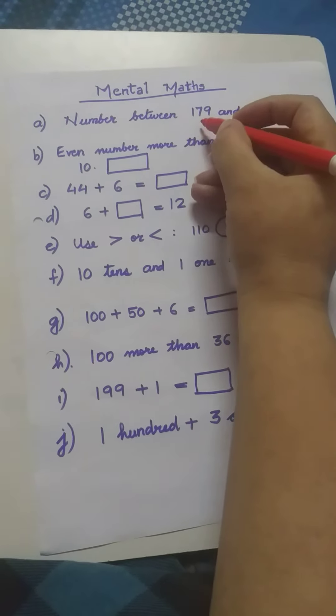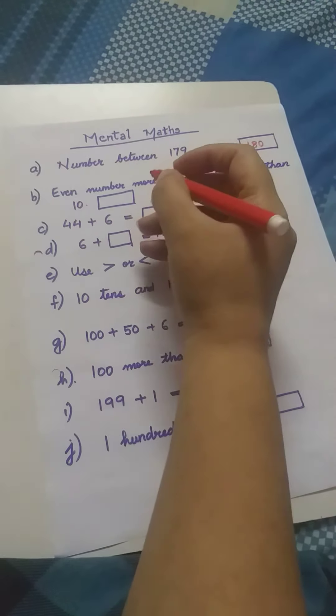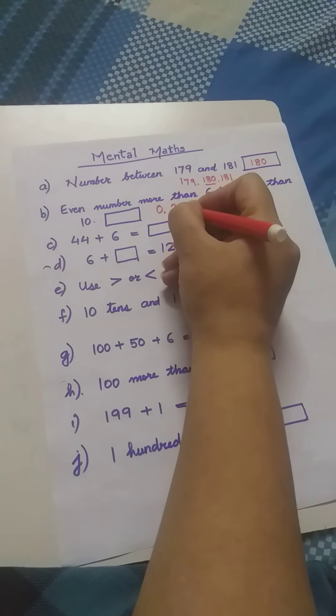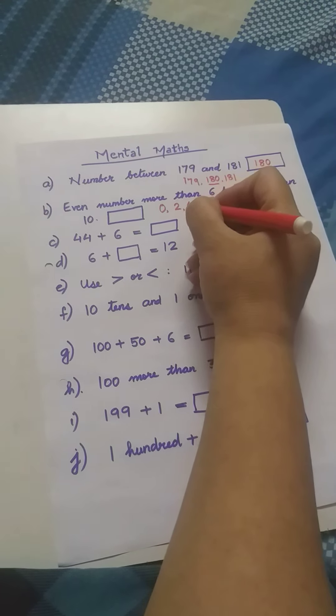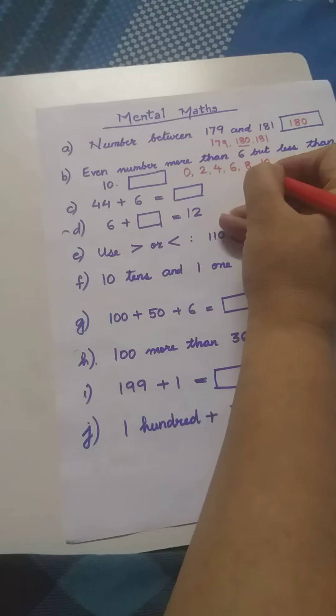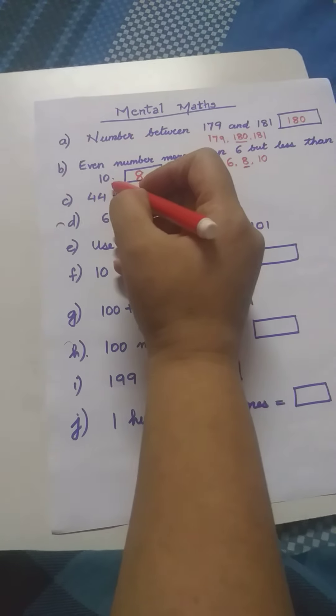Let us solve the second question: even number more than 6 but less than 10. First, we are going to write even numbers from 0 to 10: 0, 2, 4, 6, 8, 10. These are the even numbers from 0 to 10. Now, which even number is coming between 6 and 10 — more than 6 but less than 10? Yes, it is 8. Even number more than 6 but less than 10 is 8.